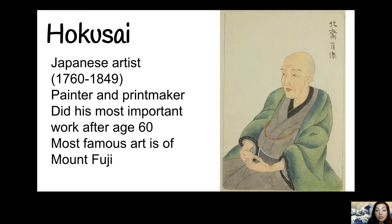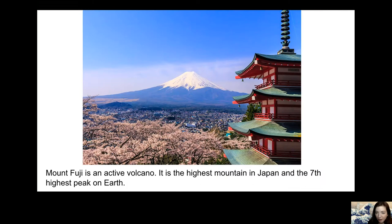What's interesting about Hokusai is that he did his most important, most valued work after the age of 60. So you don't have to do your best things all when you're young — some people, when they're later on in life, discover things that they are very good at. His most famous artworks are of Mount Fuji, which is a volcano in Japan. You also see the cherry blossoms that are known to Japan, and a pagoda. Mount Fuji is an active volcano and the highest mountain in Japan — also the seventh highest peak on Earth. It's a very valued landmark in Japan, which is why he represented it so many times.